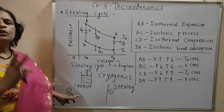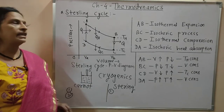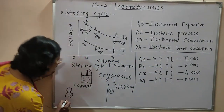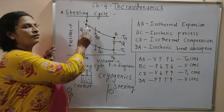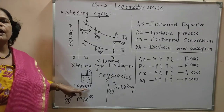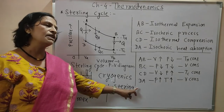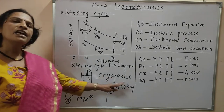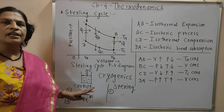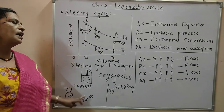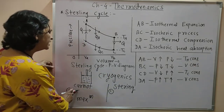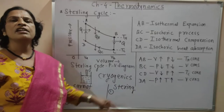In the Carnot cycle, there are two isothermal and two adiabatic processes. In the Stirling cycle, there are two isothermal and two isochoric processes. The efficiency of the Carnot cycle is maximum among all engines. The efficiency of the Stirling cycle is less than that of the Carnot engine. Finally, the efficiency of the Carnot cycle does not depend on the working substance, but the efficiency of the Stirling engine depends on the working substance.